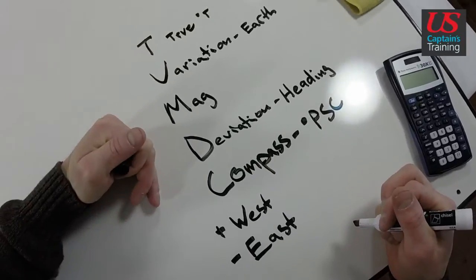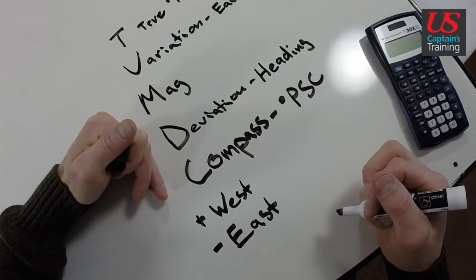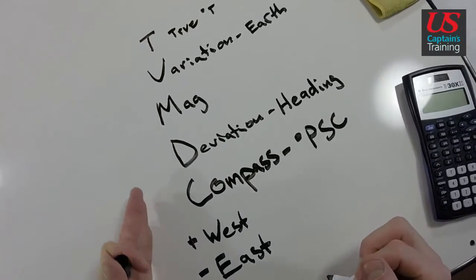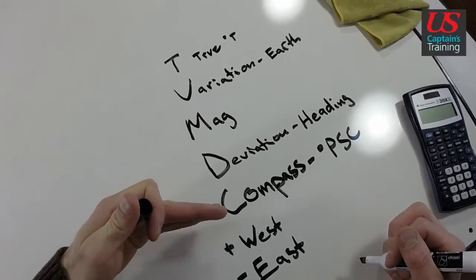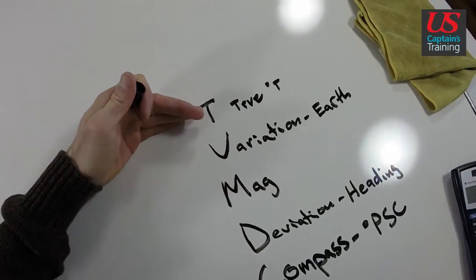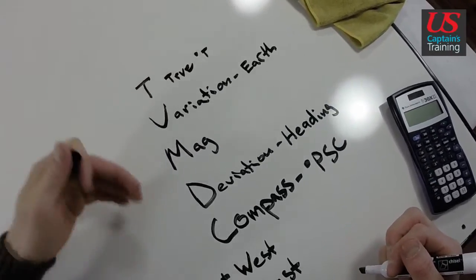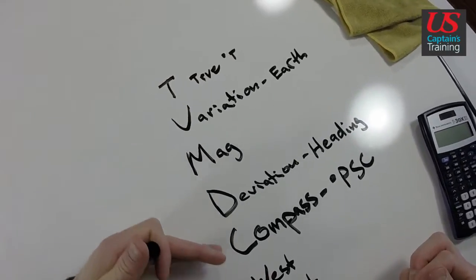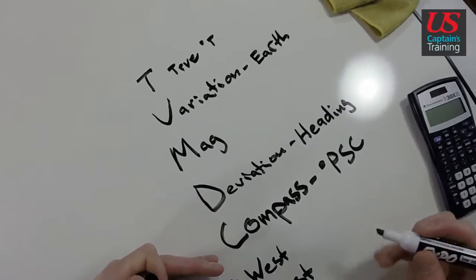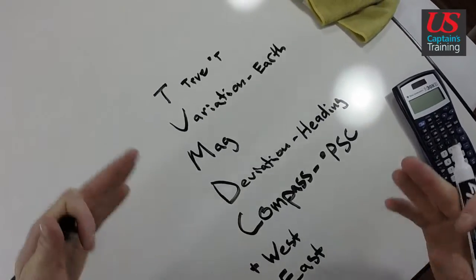And this is what happens when we go down. When we go down, we add west and subtract east. When we go up, we do the opposite. And you can say, can dead men vote twice at election? It's about Chicago back in the day. They had some dead people voting. So, what I like to do,